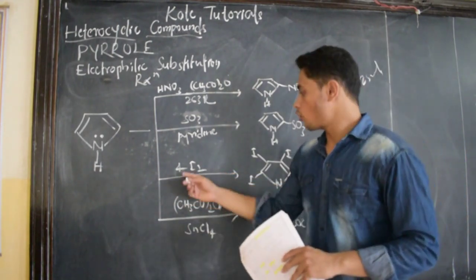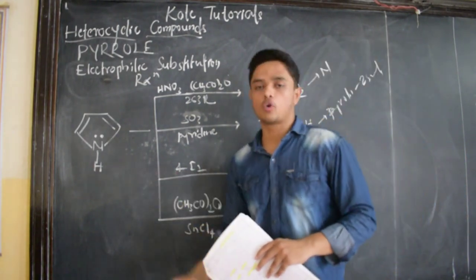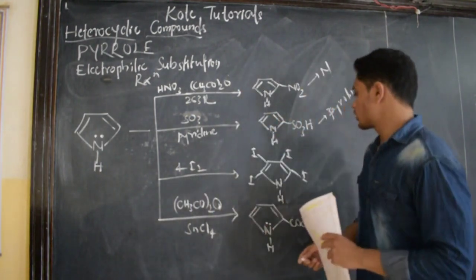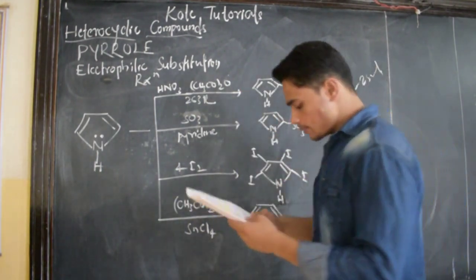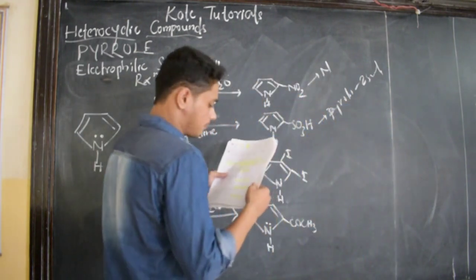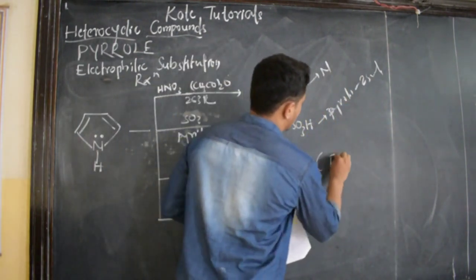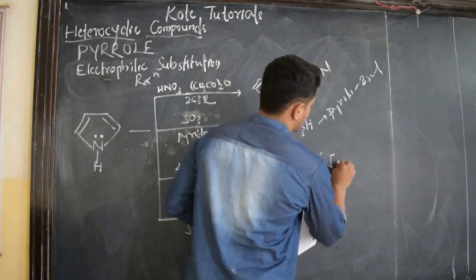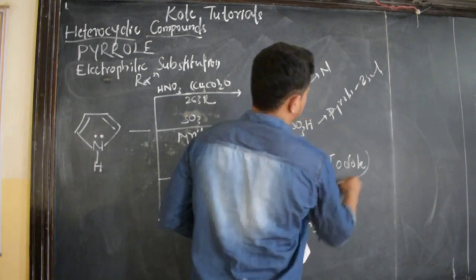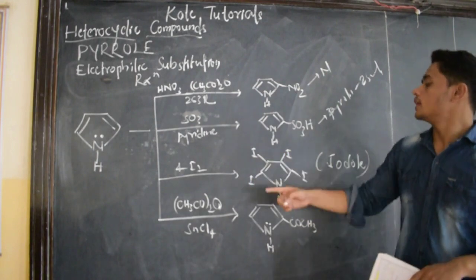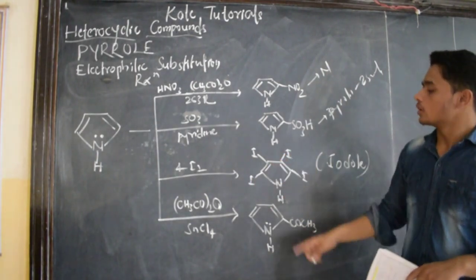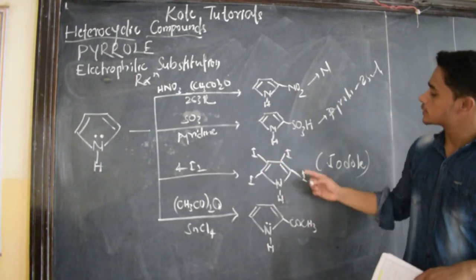When halogenated with iodine, if 4 moles of iodine react with 1 mole of pyrrole, we get tetraiodopyrrole. The other name of this tetraiodopyrrole is iodole. Tetra means 4: 1, 2, 3, 4. All these 4 hydrogens are replaced by iodine.